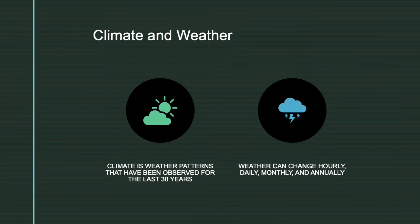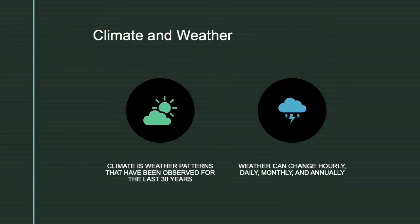Weather patterns that have been observed for approximately the last 30 years determine the climate in a particular region. In contrast, it is possible for the weather to change hourly, daily, monthly, and even year to year. Climates vary from place to place all over the earth. In some parts it is nearly always rainy and hot, which would indicate a tropical climate. Other areas tend to be cold and snowy most of the time—their climate is polar. In addition to the icy poles and steamy tropics, Earth's biodiversity and geologic heritage are shaped by a variety of climates.